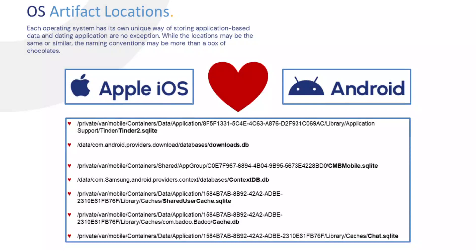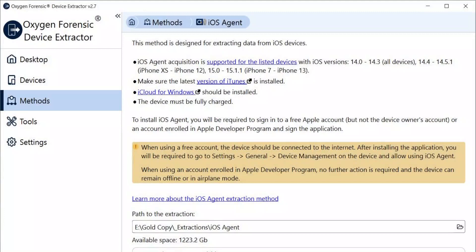Let's take a quick peek into operating system artifact locations. Each operating system has its own unique way of storing application-based data, and dating applications are no exception. While the location may be the same or similar, the naming conventions may vary. This is not an all-inclusive list — just some of the locations between Apple and Android where we can find unique application data.